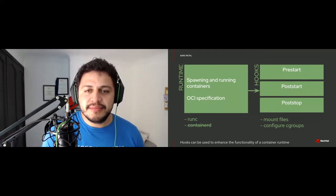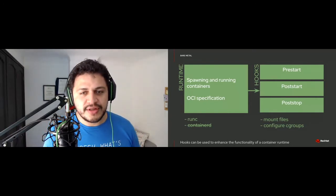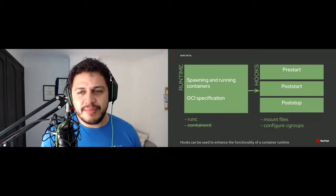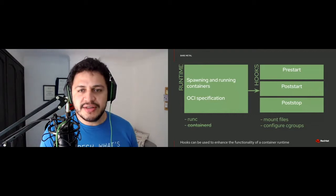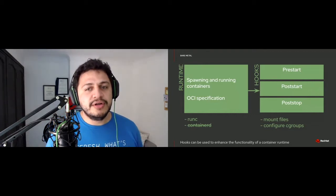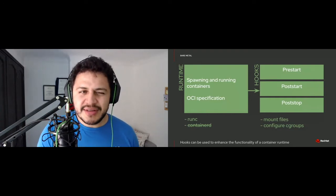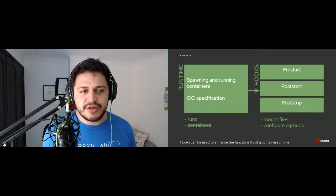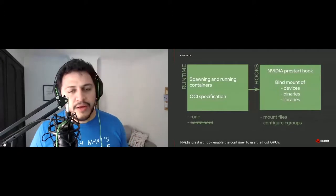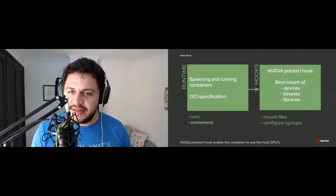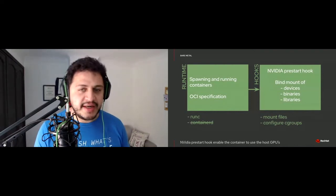OCI hooks can be separated into three different ones: the pre-start hook, the post-start hook, and the post-stop hook. By the name you can pretty much guess what they do. The pre-start is a small script you can set up to run before starting the container. The post-start runs after start, and the post-stop is mostly a cleanup script you can set up for your container.